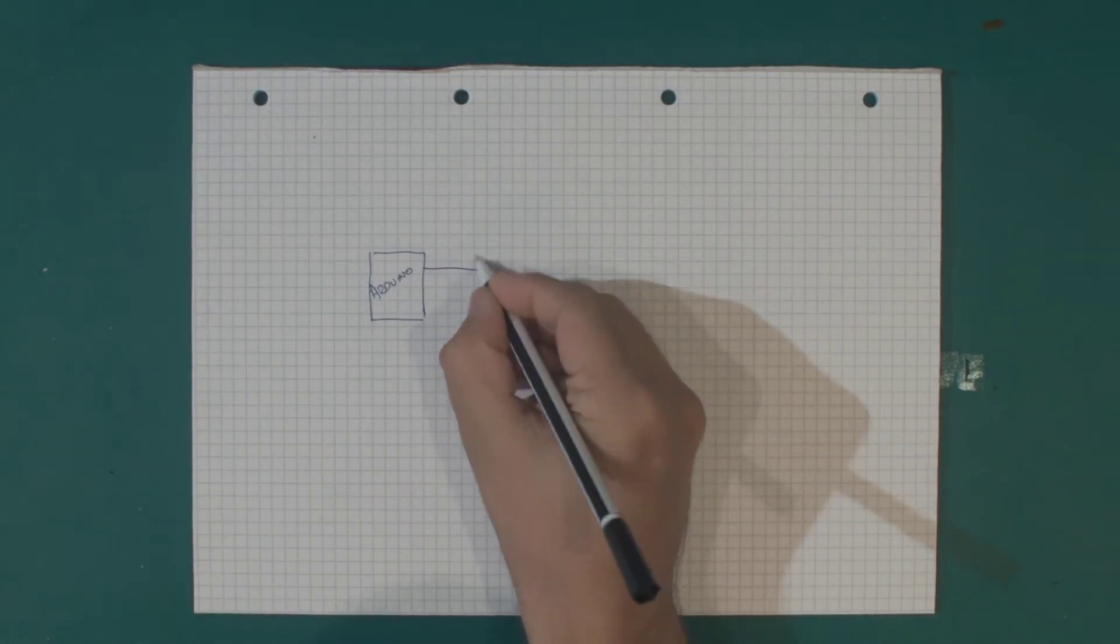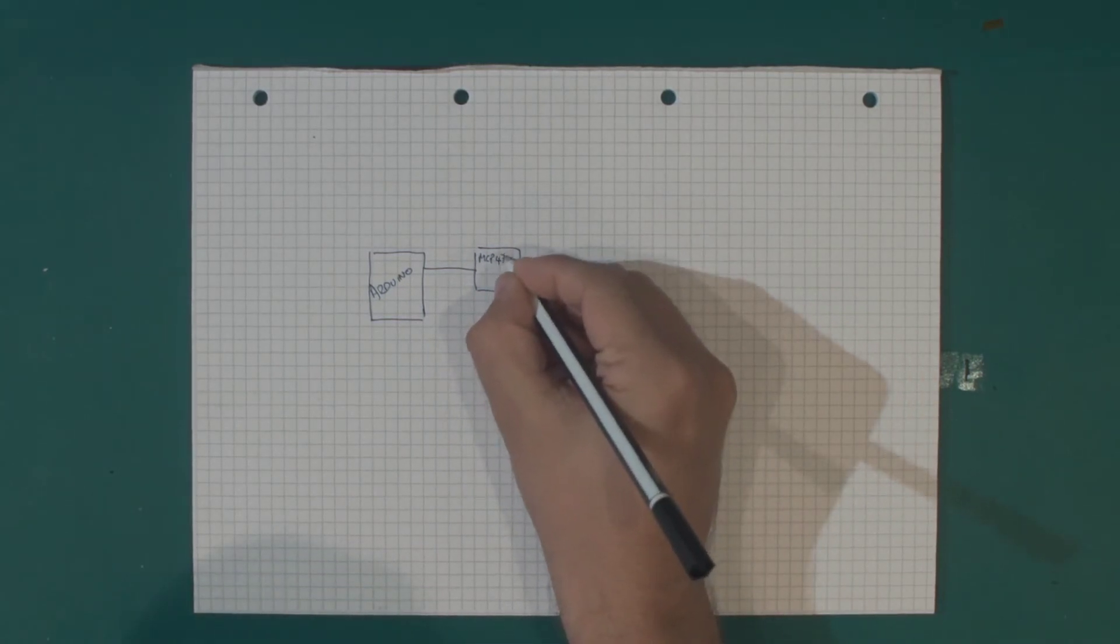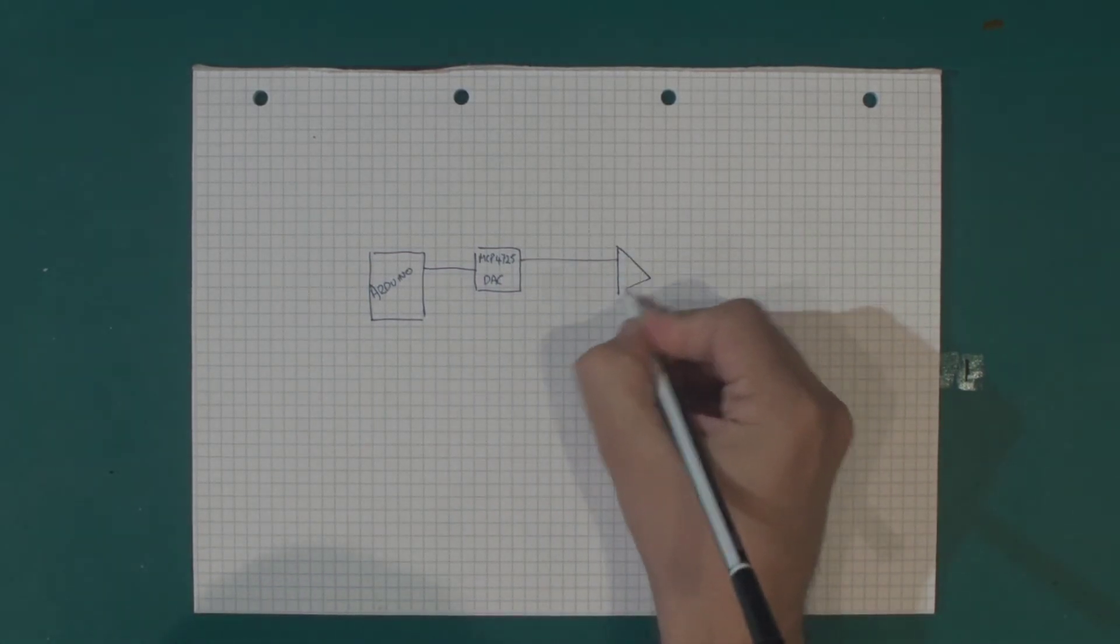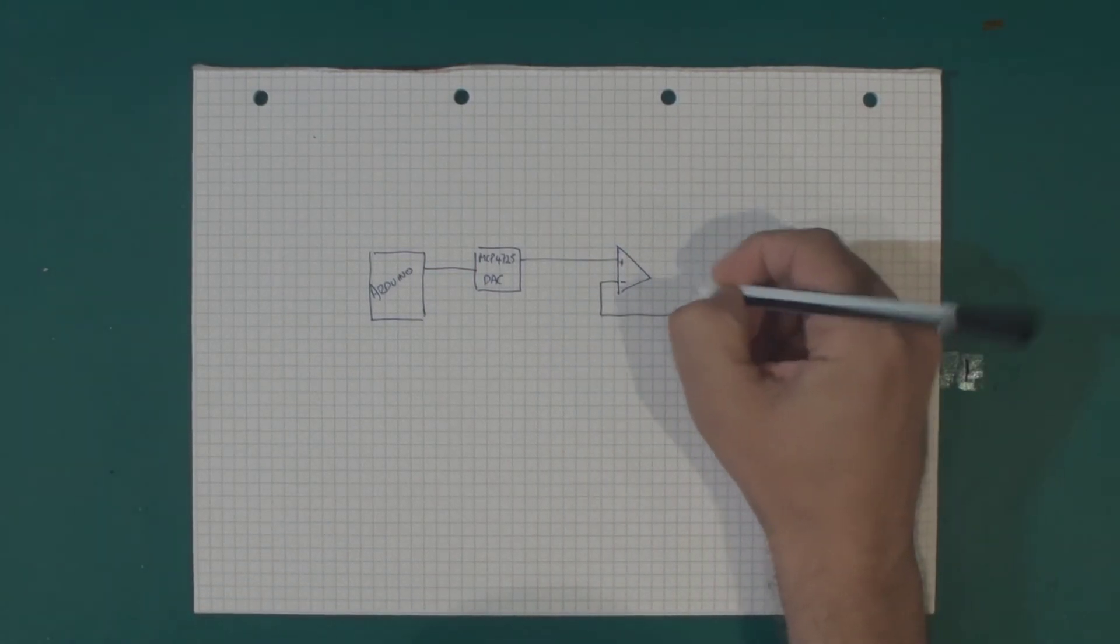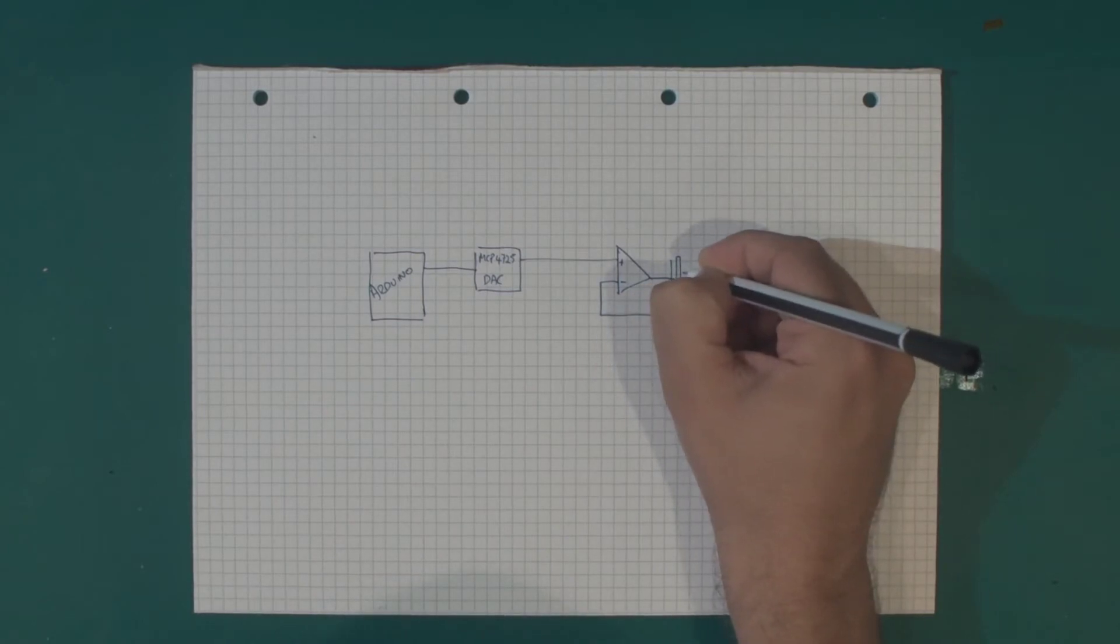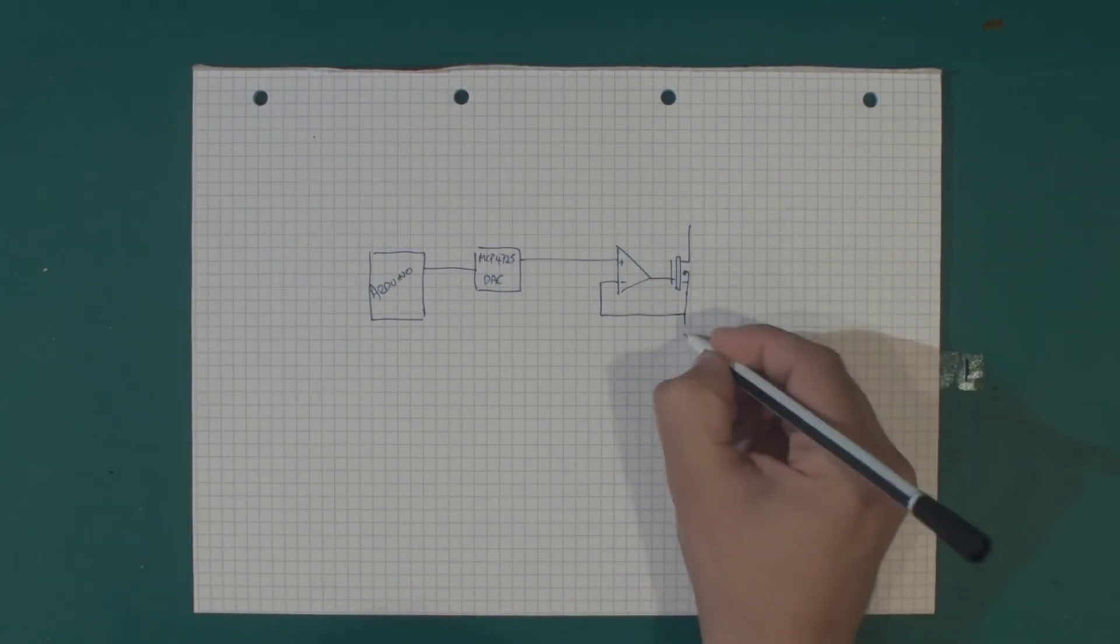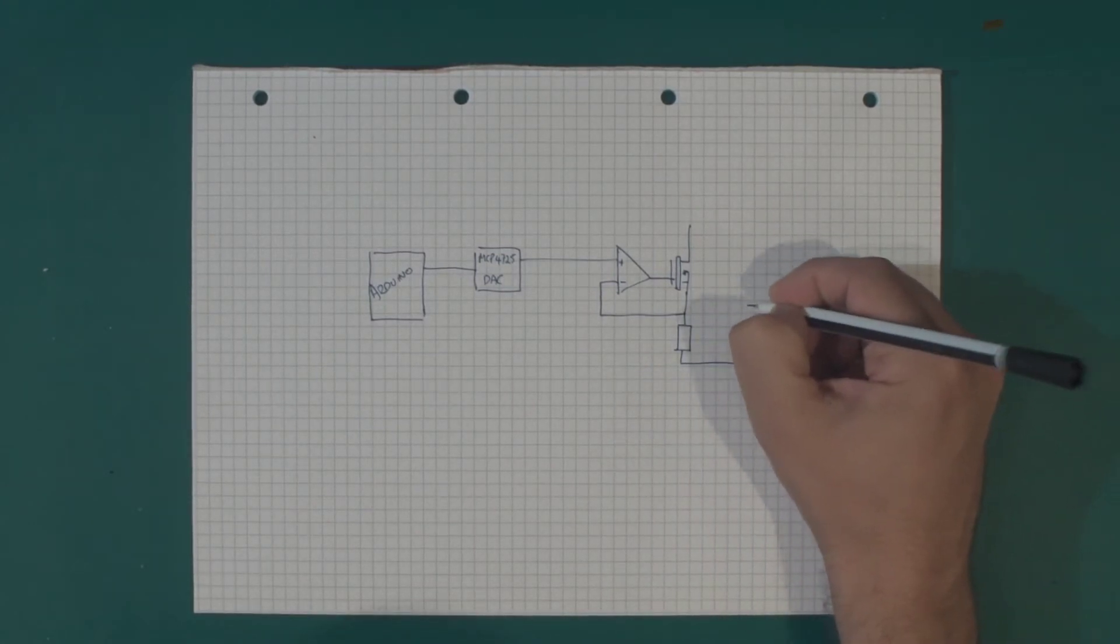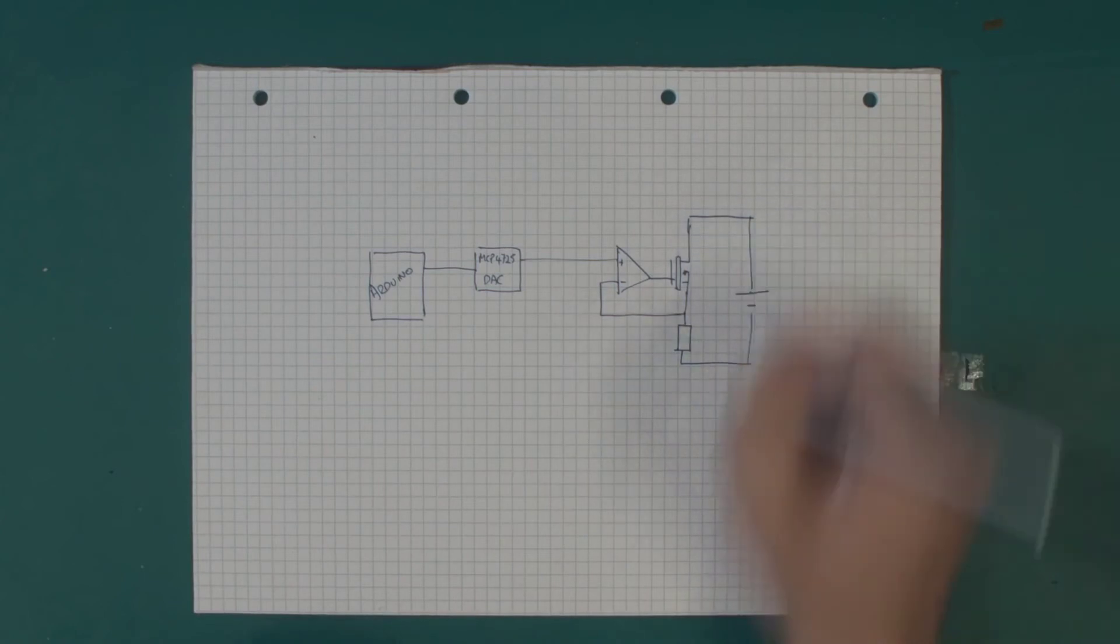Which now is controlling our MCP4725 DAC, which is feeding the input of our op amp. Then our op amp is controlling a MOSFET, which I can't remember how to draw properly. It's like this.